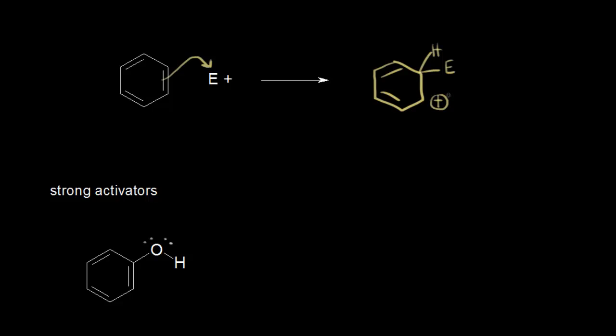If you could imagine a substituent on our benzene ring that somehow increased the electron density in that ring, that would make the benzene ring even more nucleophilic. That increased electron density would help to stabilize the positively charged sigma complex, which means the sigma complex is more likely to form. A substituent that increases electron density we could call an electron donating group, and an electron donating group would activate the ring towards electrophilic aromatic substitution.